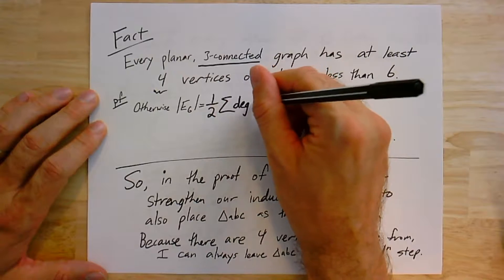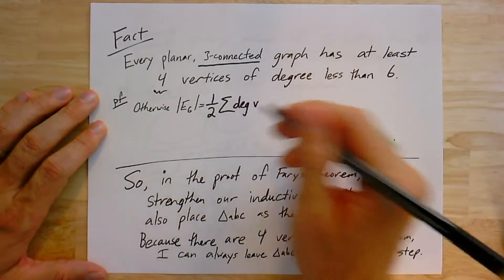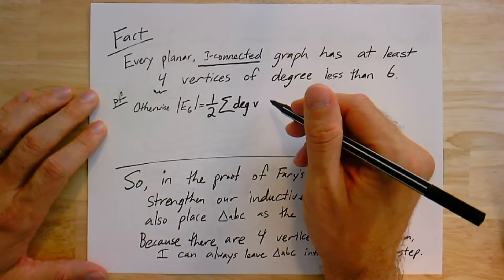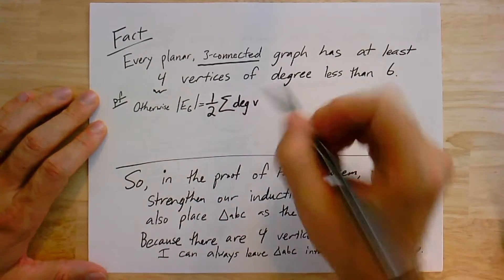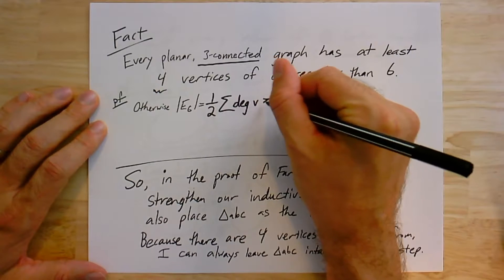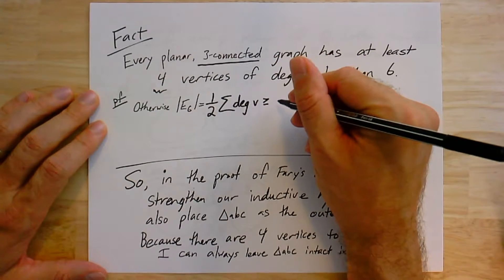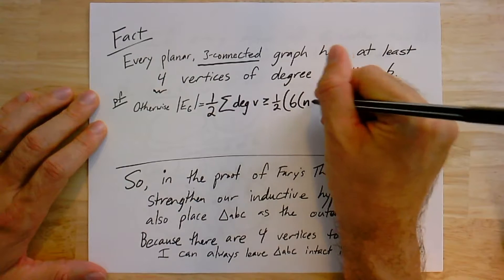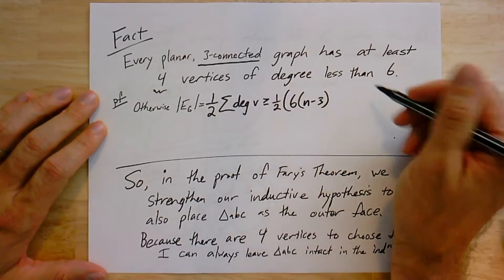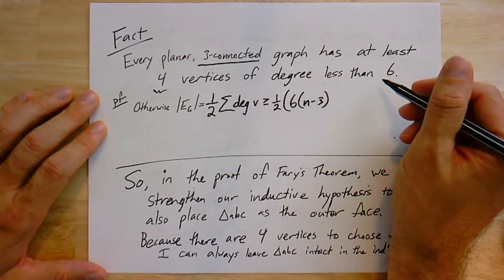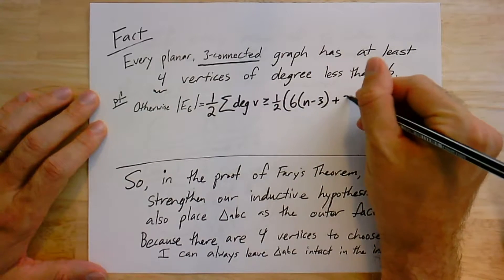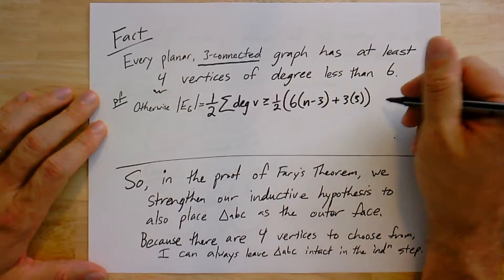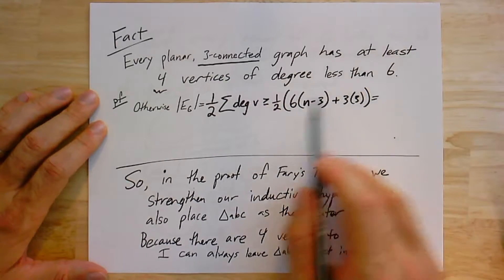The proof here is really simple. Here is the idea: the number of edges is half of the sum of the degrees. So if I sum over all the vertices in the graph and I take the degree of those vertices, that's going to be twice the number of edges. Now, if I suppose that there are fewer than four vertices like this, that's the same as saying that all but three of the vertices, or at least all but three of the vertices, have at least six neighbors. So I've got 6 times n minus 3.